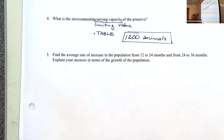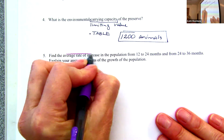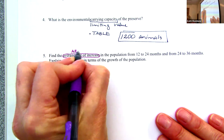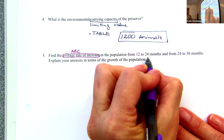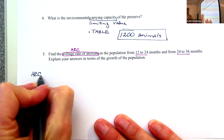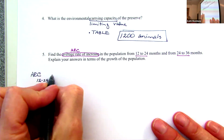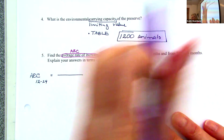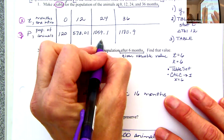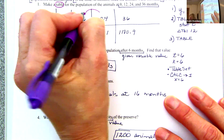You had a question similar to this on the quiz and a lot of students missed it. It's on the quiz, it's on the review, and there's a high likelihood you'll see a question like this on the test. We're asked to find the average rate of change—in this case an increase—for two intervals: 12 to 24 months and 24 to 36 months. What goes on top? The difference in the function values.